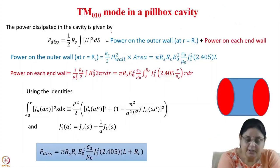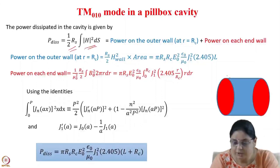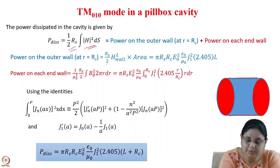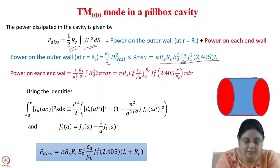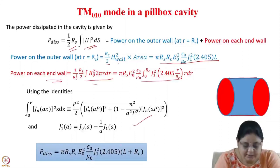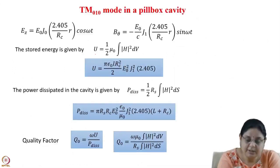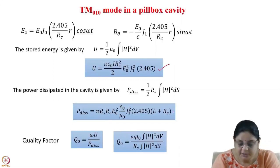The power dissipated in the pillbox cavity is given by R_S/2 times the surface integral of H². Integrating over the outer wall and both end walls separately and using Bessel function identities, the total dissipated power can be calculated. The stored energy in the cavity is given by half mu_0 times the volume integral of H² over the entire cavity volume. From these expressions for stored energy and power dissipation, the quality factor Q0 of the pillbox cavity can be calculated.